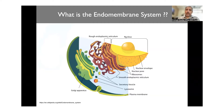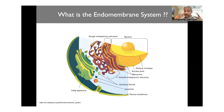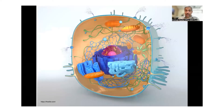One important element to consider when we think about the endomembrane system is, as the name suggests, it's made up of membranes. Membranes are made up of lipids, and they have proteins and other components embedded in them. It is an internal membrane system — a lot of the players in the cell, apart from the mitochondria, are all part of the endomembrane system.